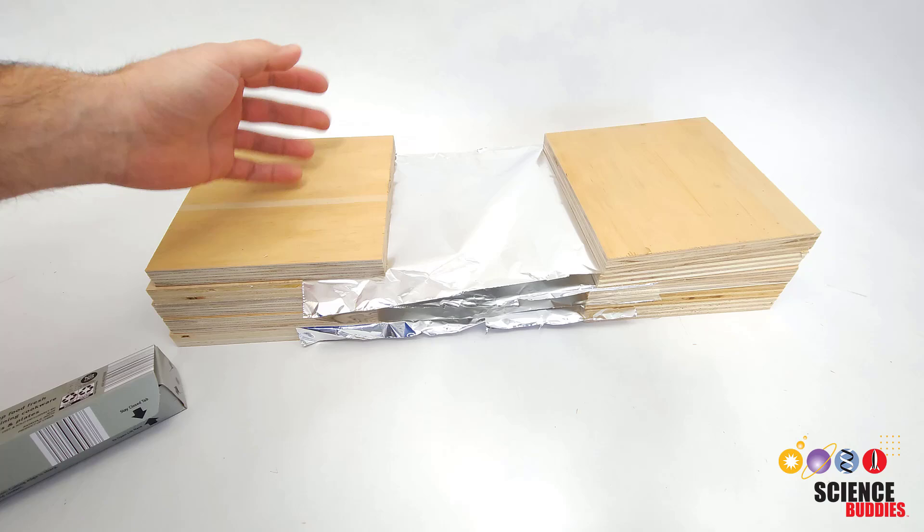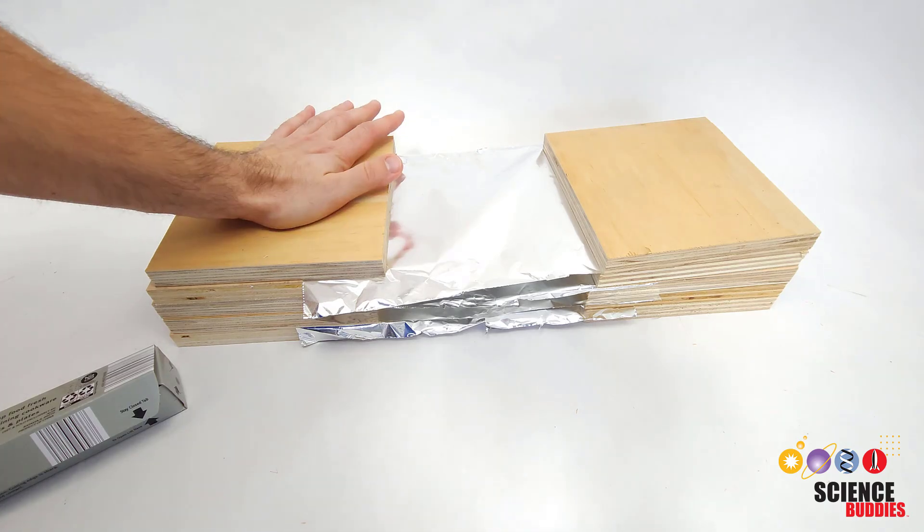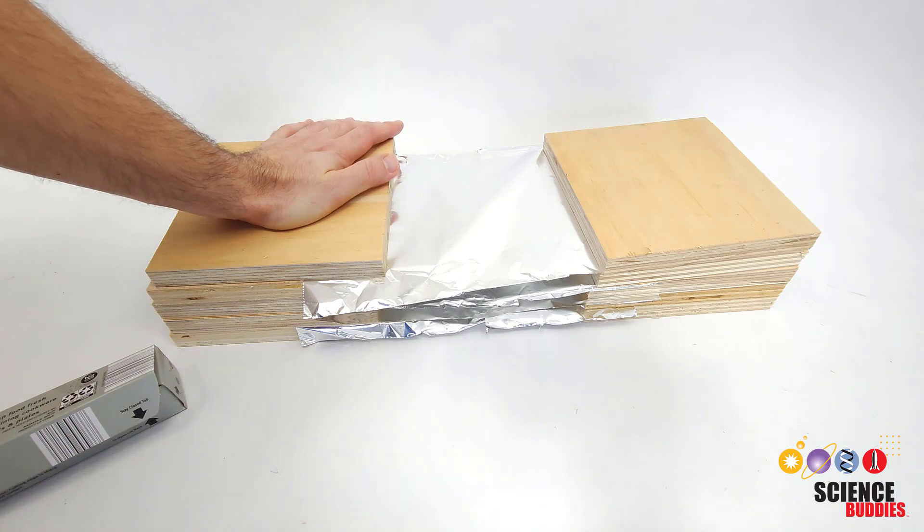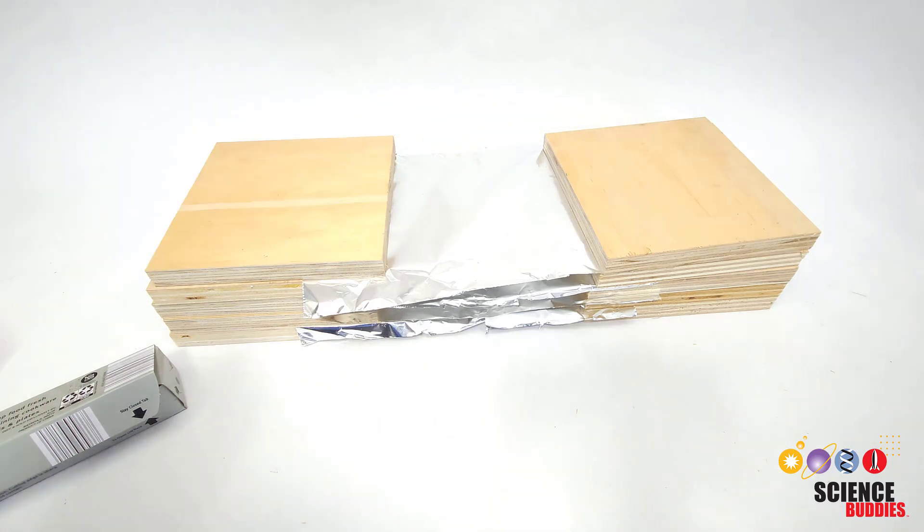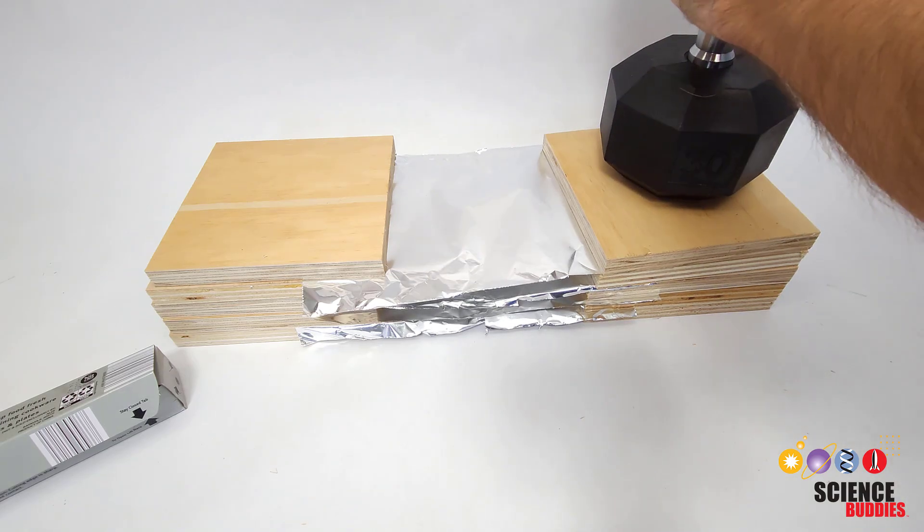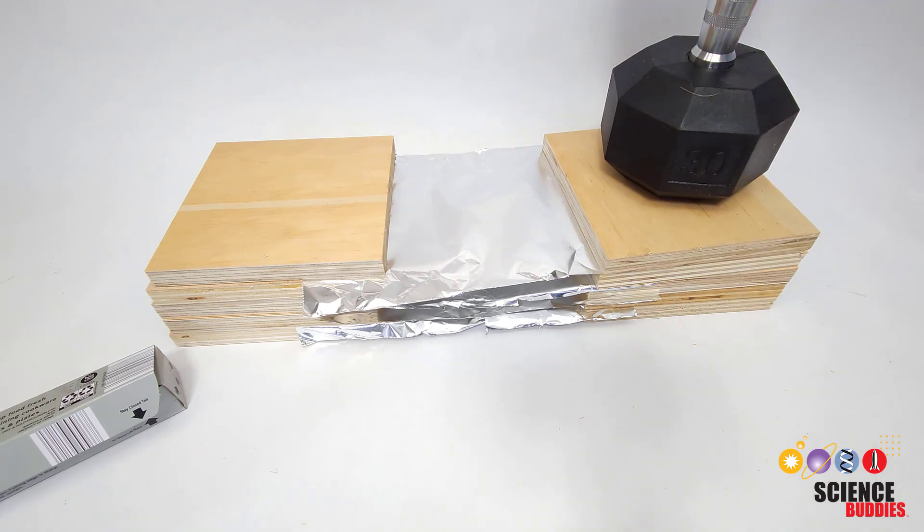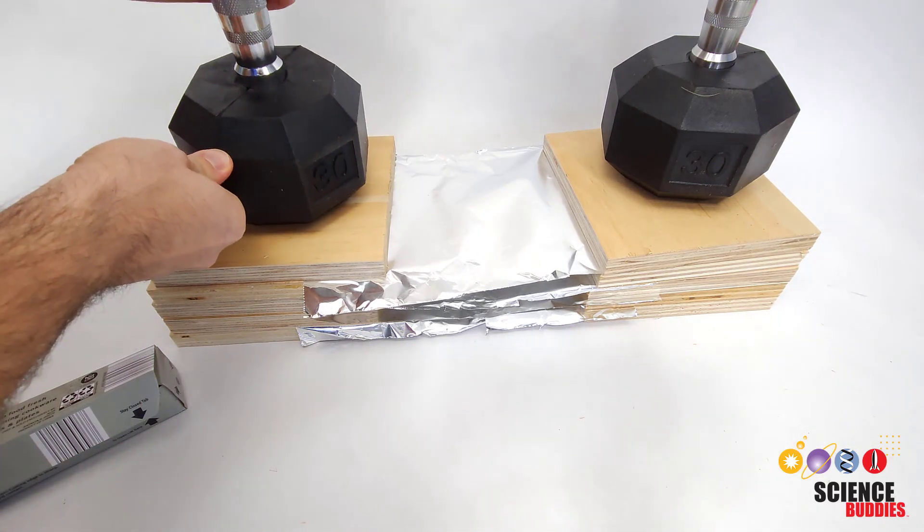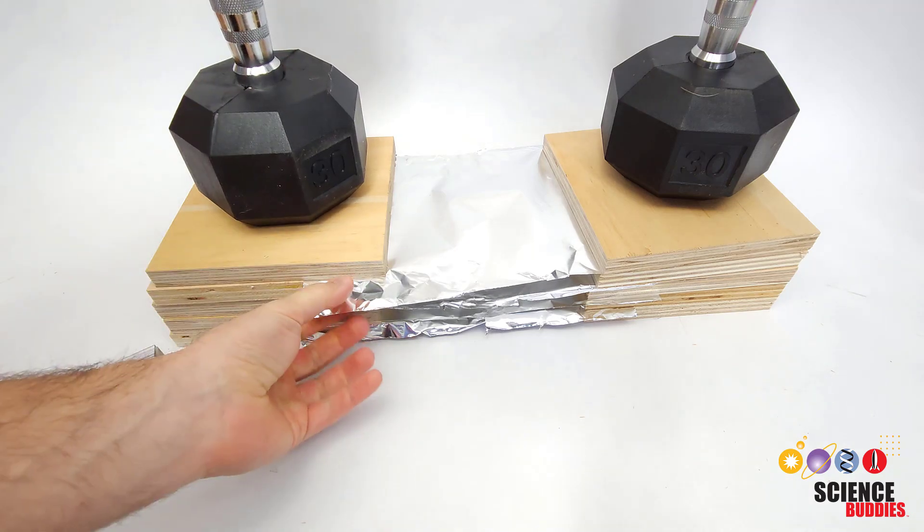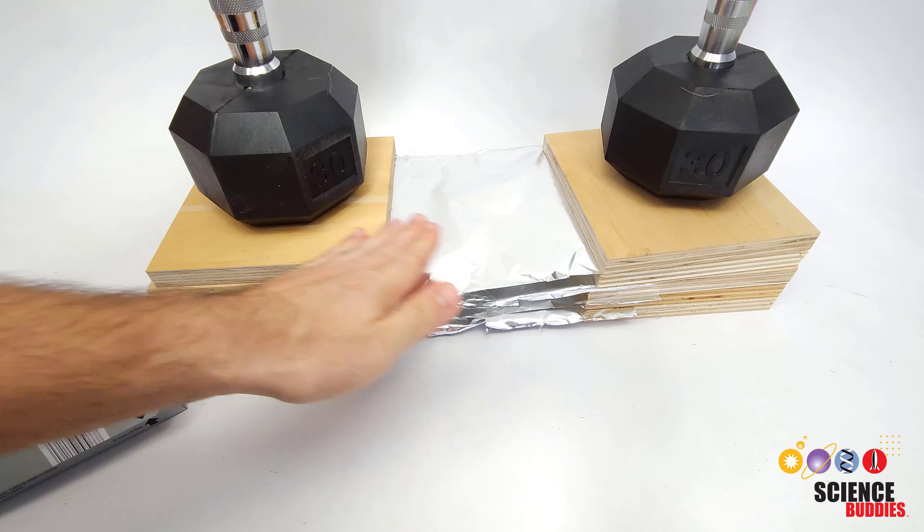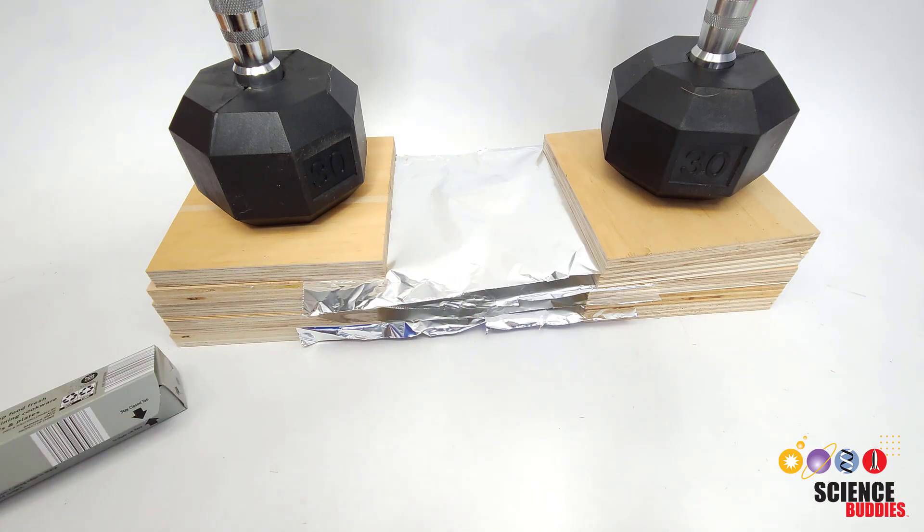You could use something like dumbbells, large rocks, anything really heavy you have around that is going to be heavy enough to clamp down and hold the aluminum foil in place. In this case, I have two 30-pound dumbbells. I grab these from off camera, place them carefully on top of the plywood, and now that is definitely not going to slide out. The aluminum foil is going to break before it gets pulled out from between the pieces of wood.